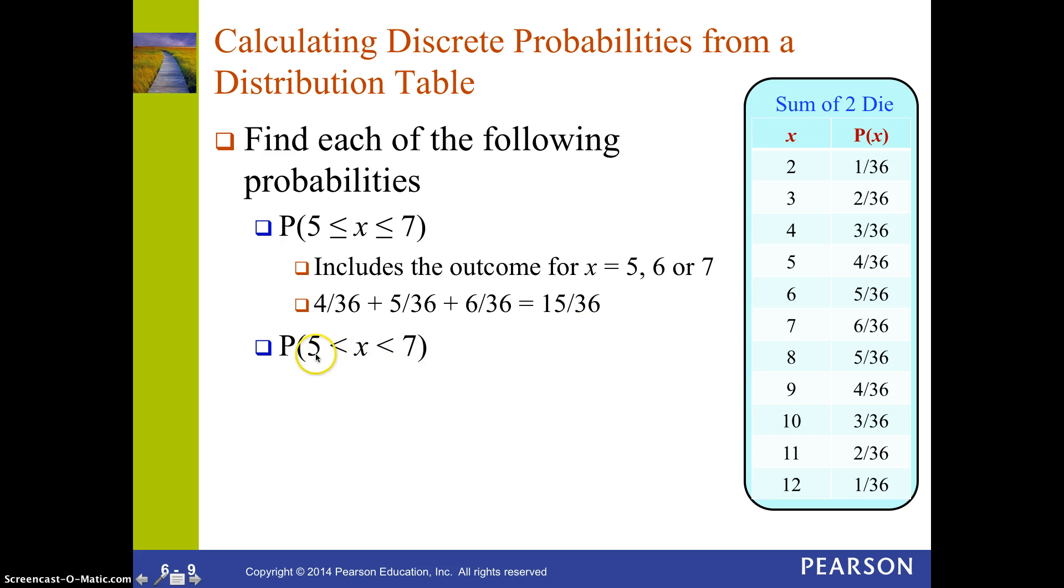But, you notice the next one, I have the same numbers, the 5 and the 7, but I don't have the equal sign. So, now, what's the probability getting X between 5 or 7, not including the 5 or the 7. In this case, my only outcome I actually can get is a 6. I just read the table over here. The probability of rolling a 6 is 5/36. Notice the difference. I have two different answers depending on whether or not I have an equal sign. And we'll look at that again when I have a continuous distribution.